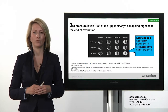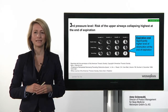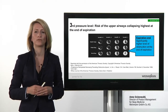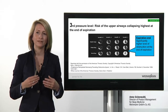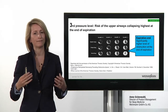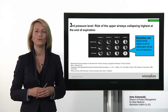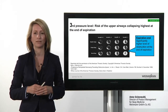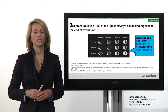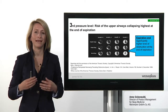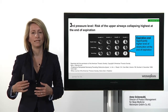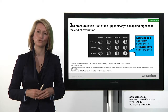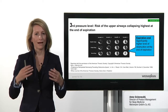Studies — for example the study by Mary Morell — have shown that the risk of the upper airways collapsing is highest at the end of expiration. So to provide a splint for the airways in precisely this phase, we need a third pressure level, higher than the pressure level at the start of expiration. The term we use for this is EEPAP, which stands for End-Expiratory Pressure Level, and it regulates pressure in much the same way as Auto-CPAP.